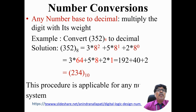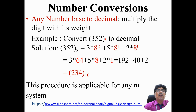Now we will go from any number base to decimal — the reverse process — which uses multiplication. Convert 352 of base 8 to a decimal number. We look at the positional weights of each digit: the rightmost digit has weight 8 power 0, next is 8 power 1, and the leftmost is 8 power 2. Multiply each digit by its positional weight: 3 × 8² + 5 × 8¹ + 2 × 8⁰ = 192 + 40 + 2 = 234 base 10.